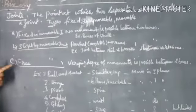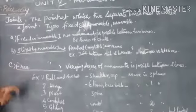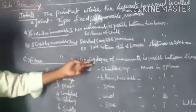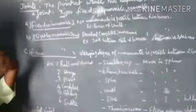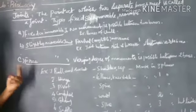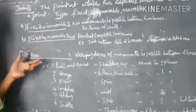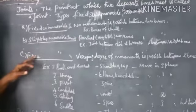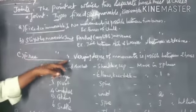Third one is free movable joint. That is called as varying degree of movement is possible between two bones. So here we are called as free movable joints.